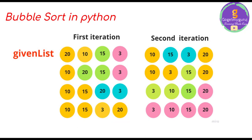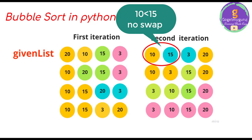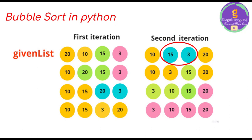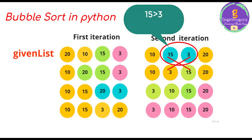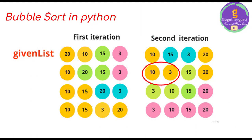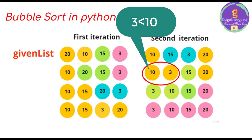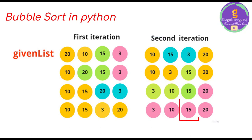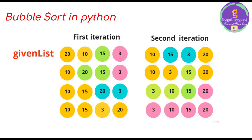In the second iteration, 10 is less than 15, so no swapping occurs. Then 15 is compared with 3 — since 3 is less than 15, they swap. Next, 3 is compared with 10 — since 3 is less than 10, they swap. So the second highest element 15 and third highest element 10 are placed correctly. Then it prints the sorted given list: 3, 10, 15, 20.